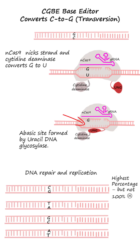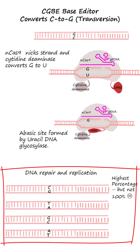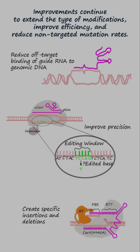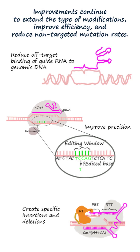The abasic site creation, coupled with nicking at the non-edited strand by nCas9, initiates DNA repair and replication, leading to a favoured insertion of guanine at the abasic site. Improvements on DNA modification tools are still required to extend the type of modifications, improve efficiency, and reduce off-target mutation rates.